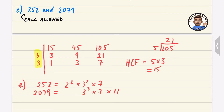Now I look at what loses. For the highest common factor: the blank (no power of 2 in 2079) loses, giving us nothing from the 2 column. For the 3 column, 3² is the smaller power, so it's the loser.